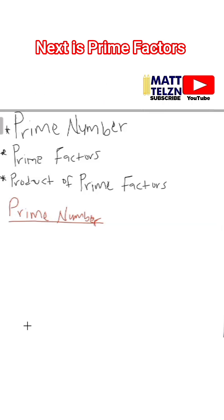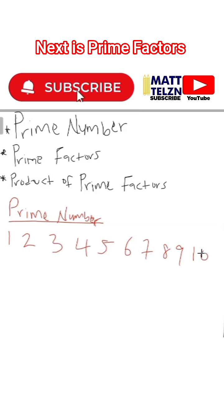Okay, now if we consider a set of numbers from 1, 2, 3, 4, 5, 6, 7, 8, 9, 10. These are the set of numbers we have here.